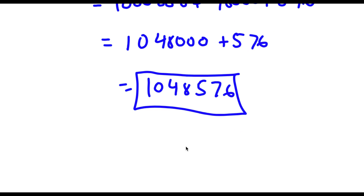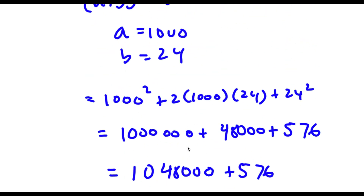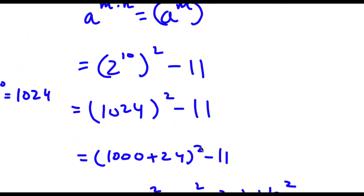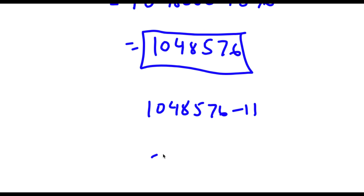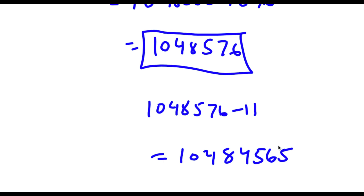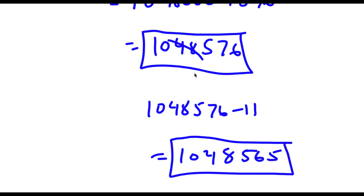So this is our answer. However, remember we have this minus 11. So now I have 1,048,576 minus 11, which is equal to 1,048,565. So this is my actual answer.